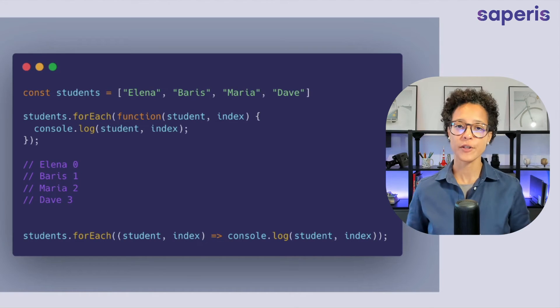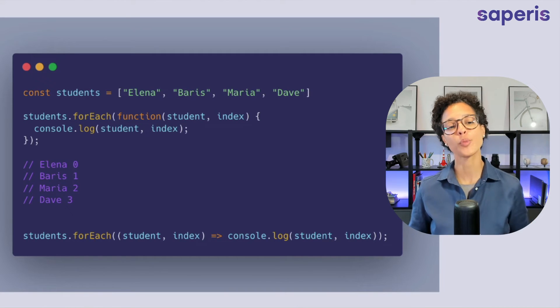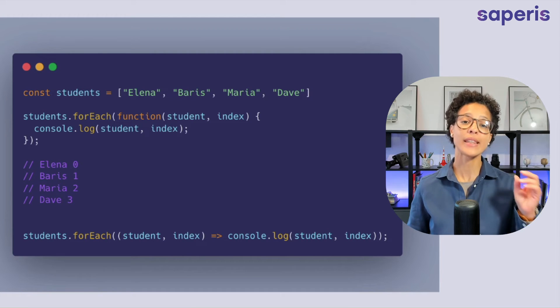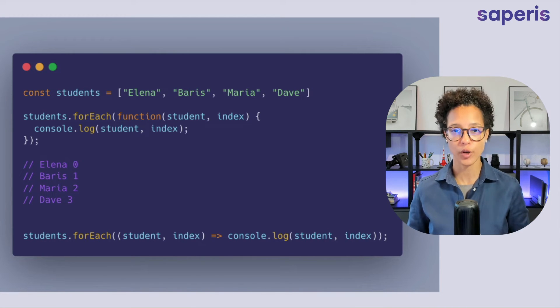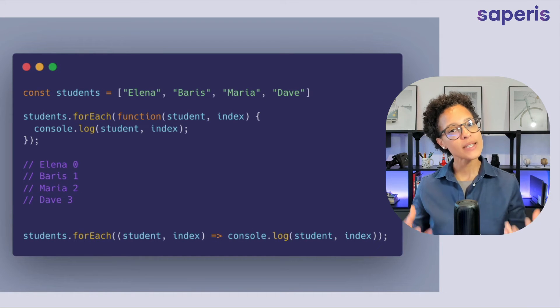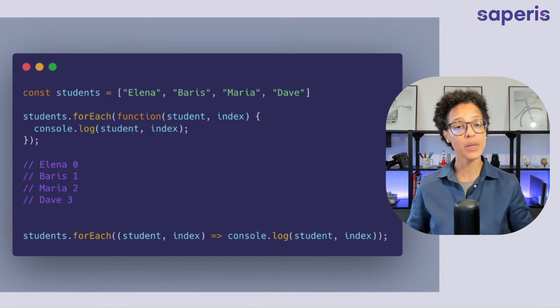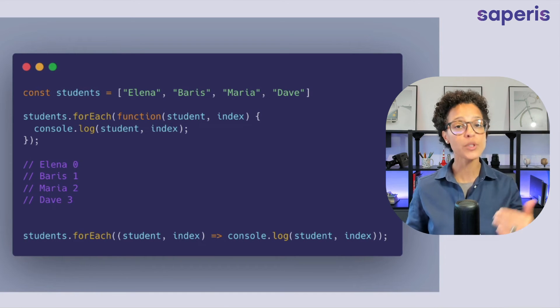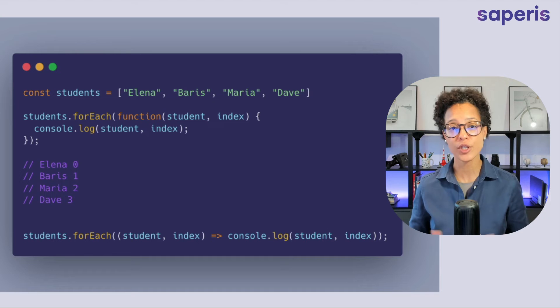Now another difference between the traditional for loop and the forEach method is that you don't need to use the index to loop over your array with the forEach method but sometimes you might need it. Maybe you need it to output it and that's what I'm showing you here. You can use the index as an optional argument when you pass in your function.